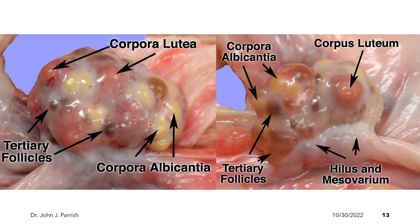Here we have the ovaries of the sow — on the left and on the right. The structures that can be found here are the corpora lutea, the tertiary follicles, and the corpora albicantia or corpus albicans. The function of the follicles is to produce oocytes and estrogen. The function of the corpus luteum is to produce progestins. Comparing to the ovary of the cow, which is considered almond-shaped, the ovary of the pig is different — it is mulberry-shaped or resembles a cluster of grapes.